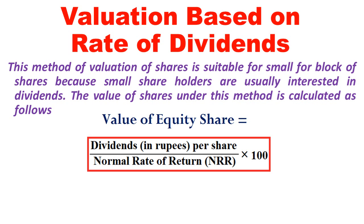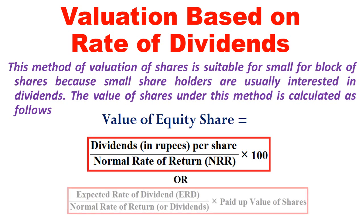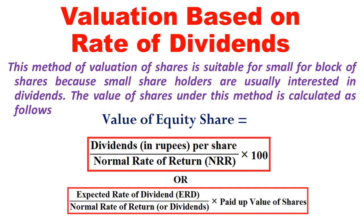Normal rate of return is called NRR. Or we can use one more formula: expected rate of dividend (ERD) divided by normal rate of return, into paid-up value of share. Either of these two formulas can be applied to get the answer. The question arises: which formula should be applied? The application of the formula is entirely based on the information provided in the question. Based on that, you will select the formula to apply. After reading the question itself, we can identify which formula can be utilized.